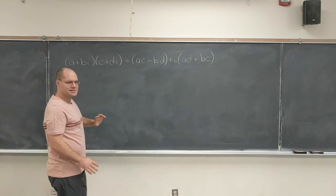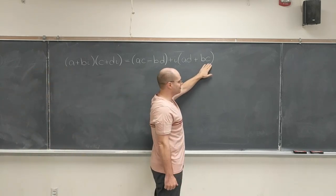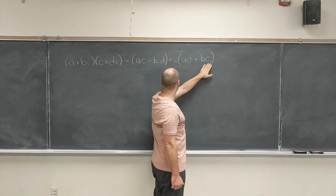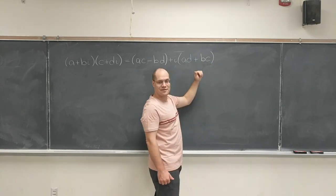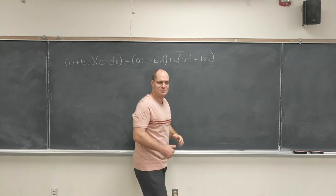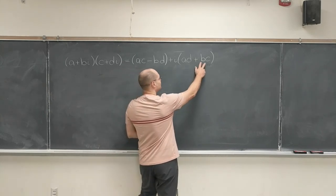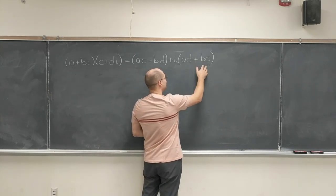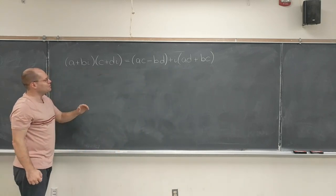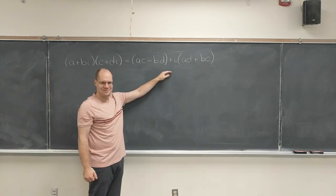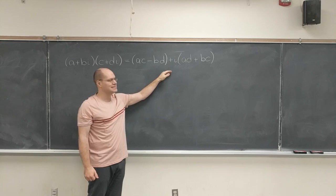So now, I would always hesitate when writing out the imaginary part. I would look back and make sure I got it right. But once I notice that, I don't have to do that anymore. It's just ad plus bc. Or if you want to put it in chronological order, bc plus ad. But it doesn't matter.